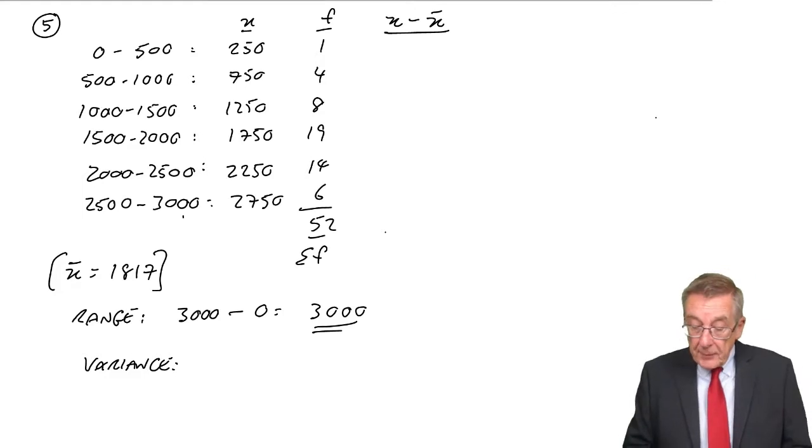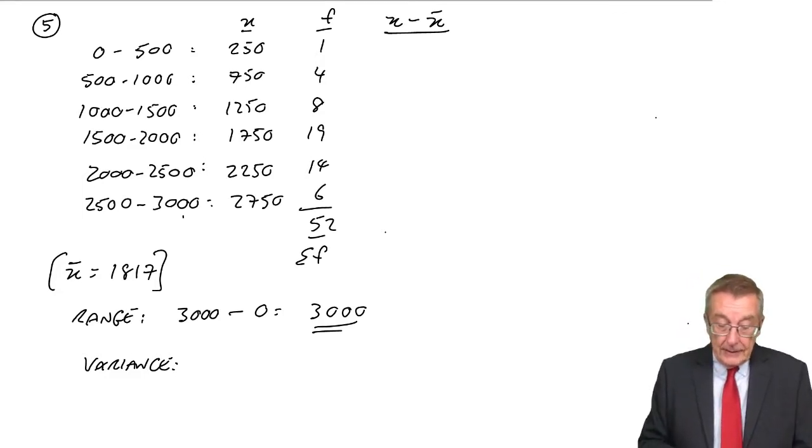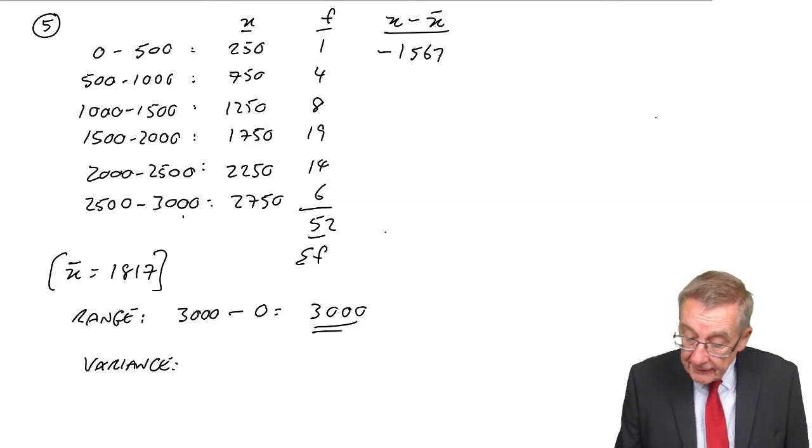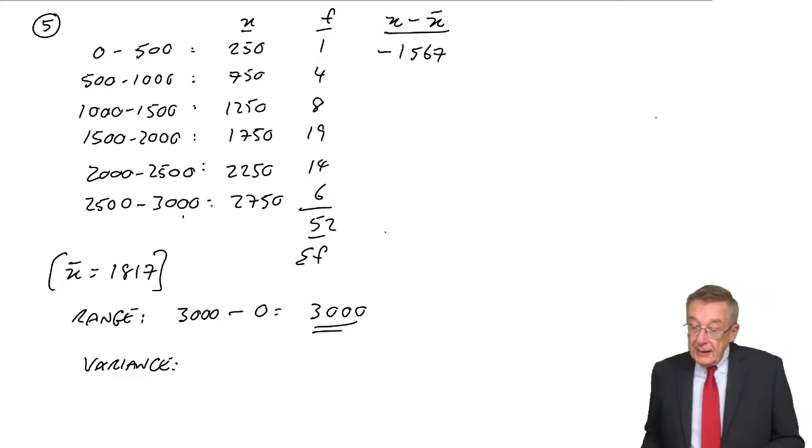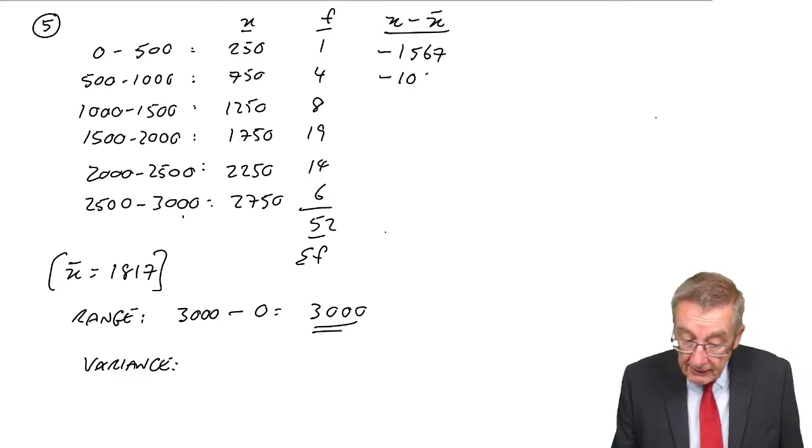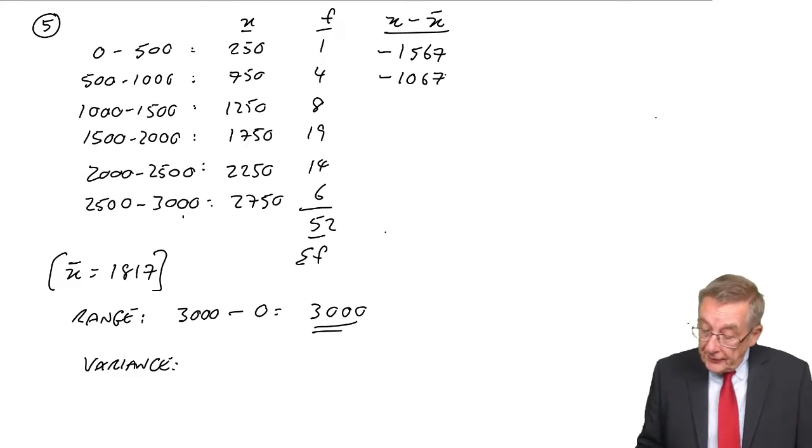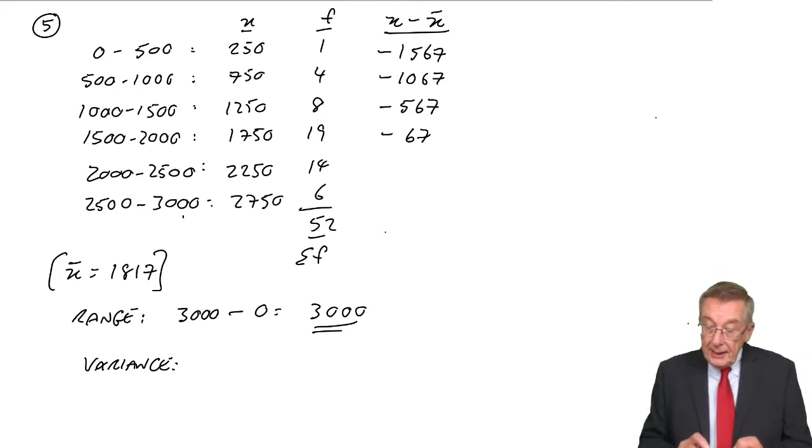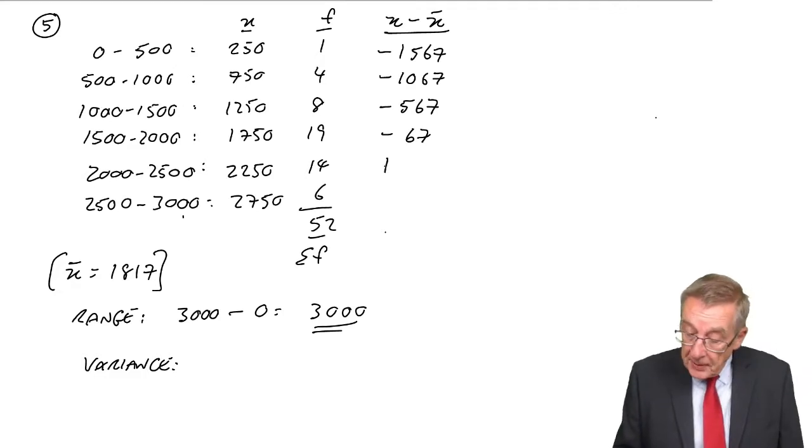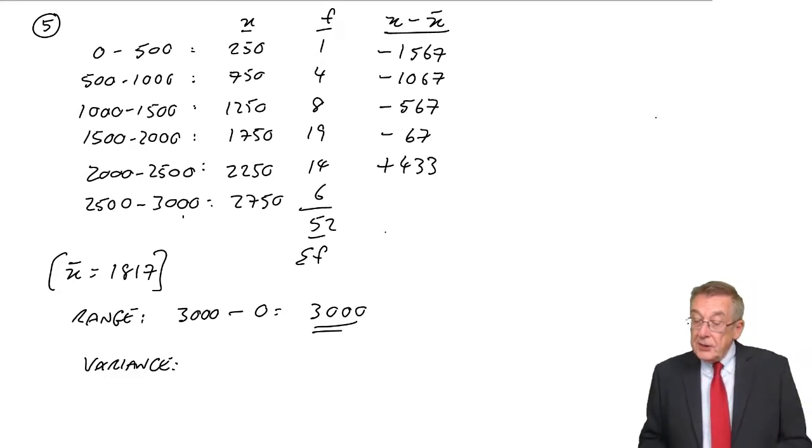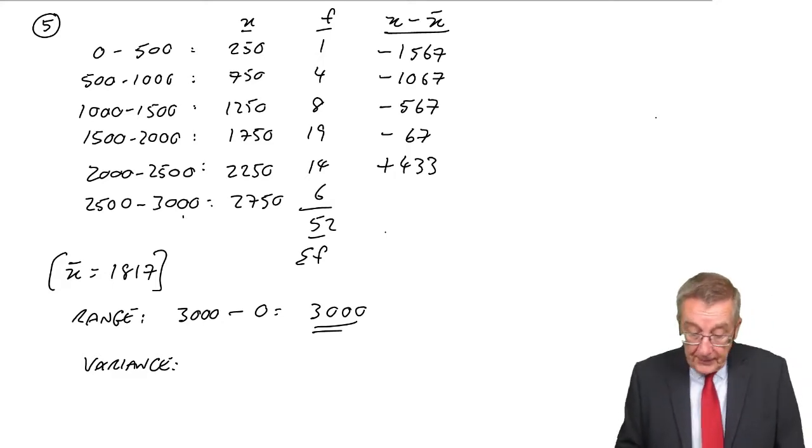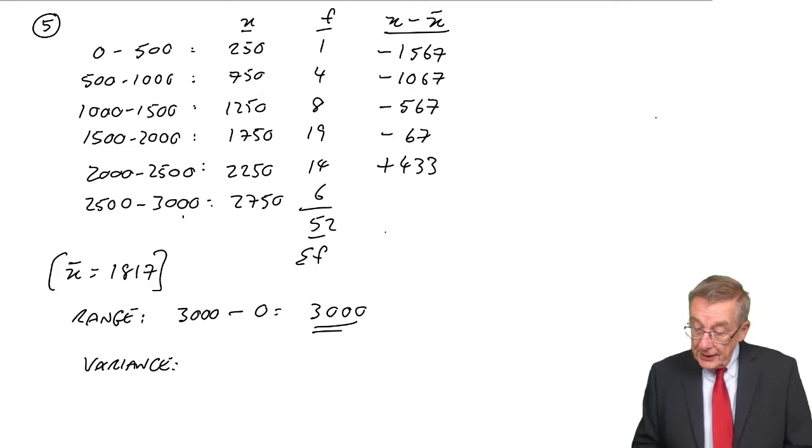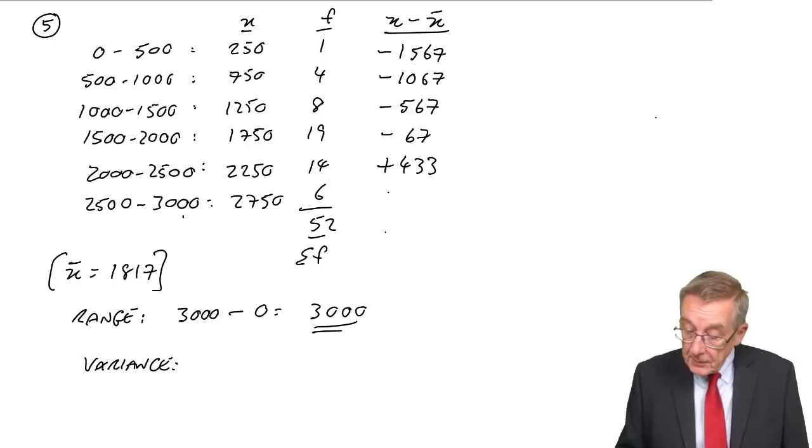And so for the variance, just as we did when it was discrete variables, we'd take the difference between the observations and the arithmetic mean. And here we do use the midpoints. So, 250 away from 1,817 is minus 1,567. 750 as against 1,817 is minus 1,067. 1250 from 1,817 is minus 567. 1750 is minus 67. 2,250 minus 1,817 is plus 433. And 2,750 is going to be, I think, plus 933. Let me just check. Yes, plus 933.